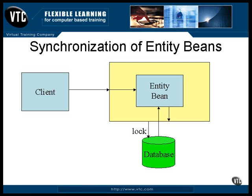The bean can do database updates, and the container keeps track of it all. If the bean is unable to finish and the transaction needs to be rolled back, it's simply a matter of removing the locks from the database and everything goes back to the way it originally was. If the transaction completes successfully, the container updates the database and ends the transaction, the lock is then released on the database.